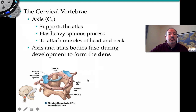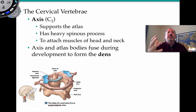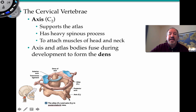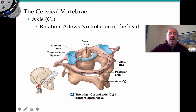The axis is like the central track of the axial skeleton — like the Earth rotating on its axis. It supports the atlas sitting on top of it. The axis has a heavy, bifid spinous process and attaches muscles of the head and neck. Both the atlas and axis are fused during development around the dens, which allows the no rotation of the head. The transverse ligament holds it tightly in place.